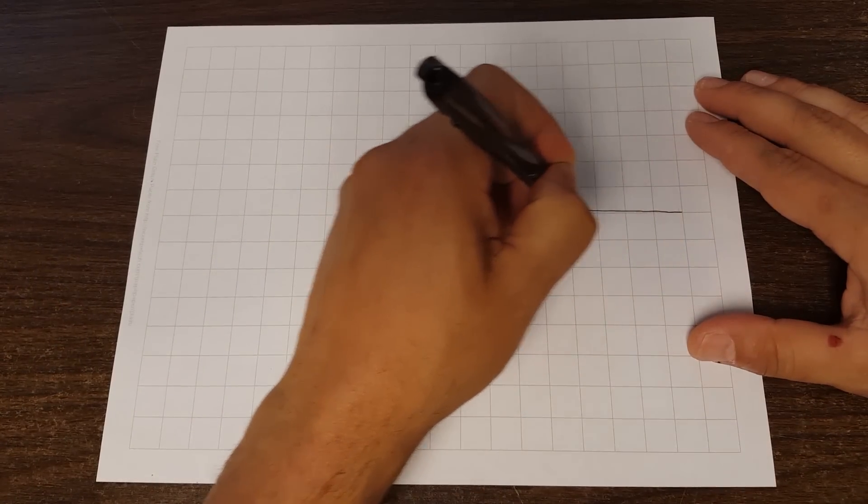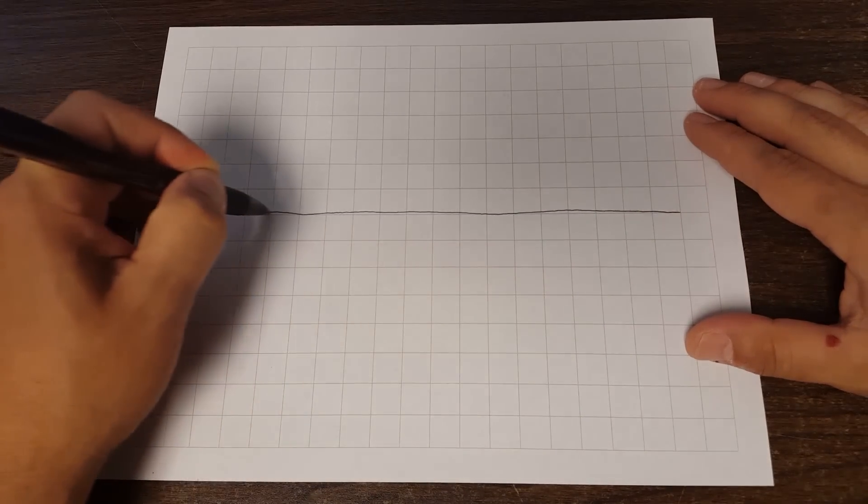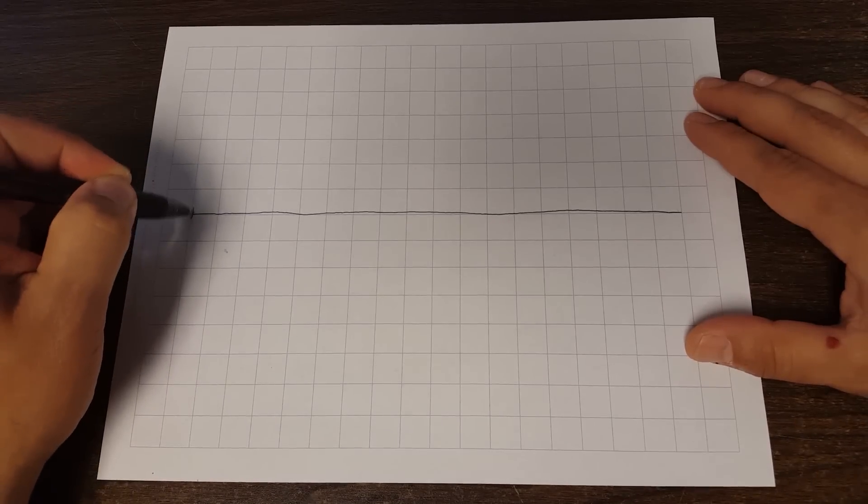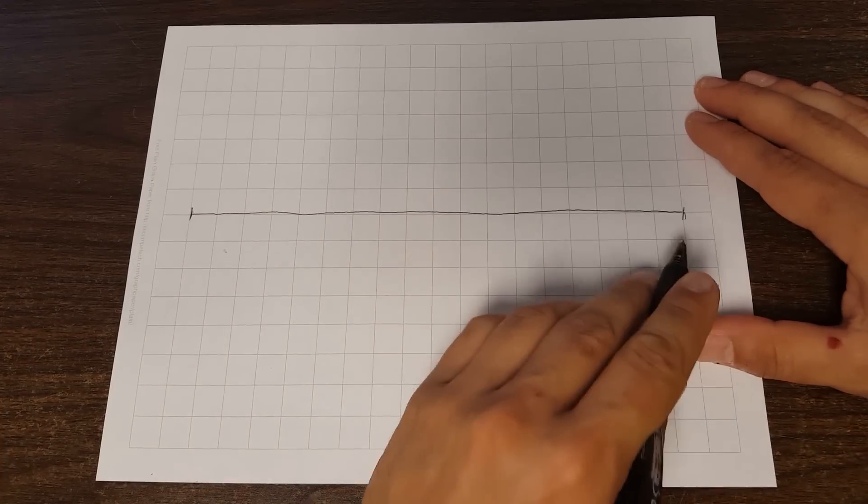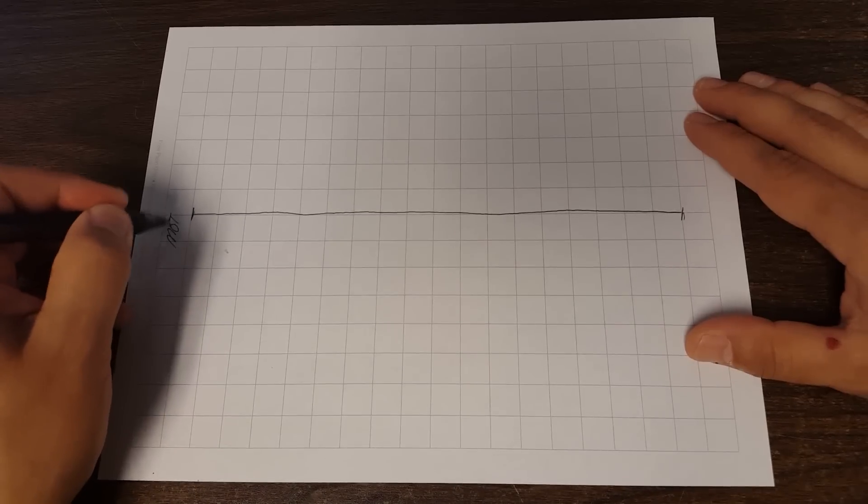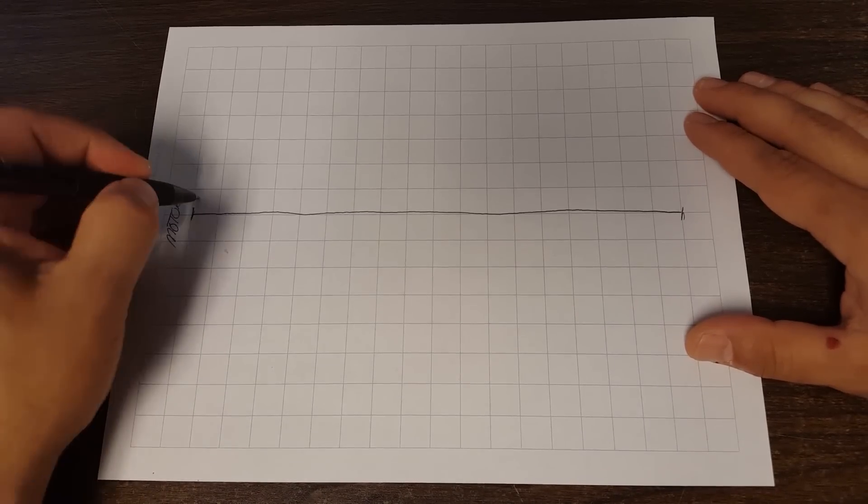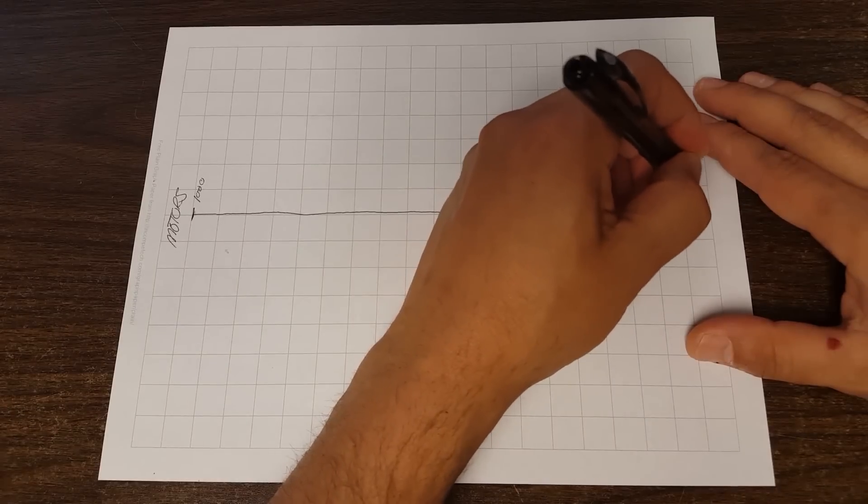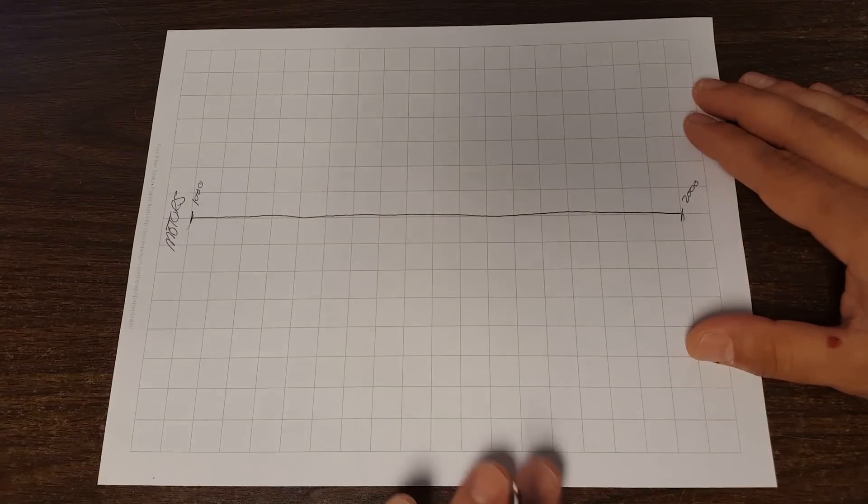So let's draw a line and let this line represent your motor outputs. It's going to run from 1,000 to 2,000. The actual values aren't really going to matter for the sake of this demonstration.